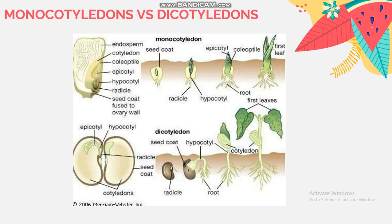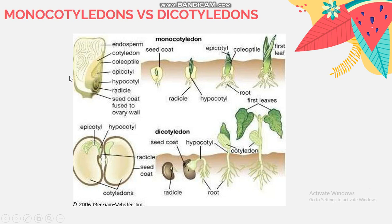Plants can be grouped into monocotyledons and dicotyledons. Monocotyledons means plants that produce seeds with one cotyledon — yang artinya tanaman yang menghasilkan biji berkeping satu. For example, plants that have monocotyledons include the corn plant, the rice plant, and also the banana plant.